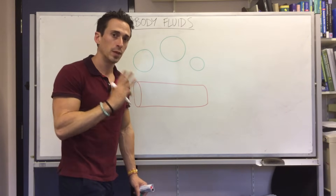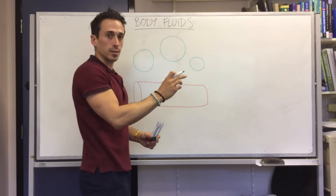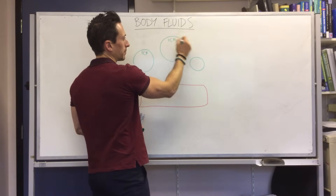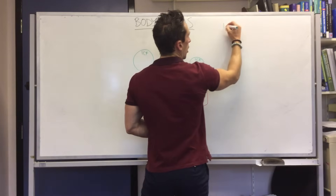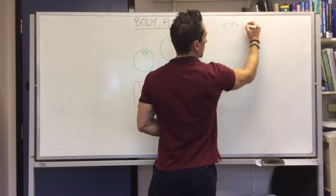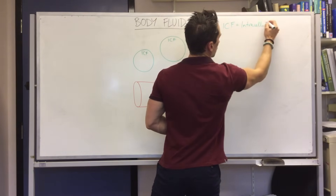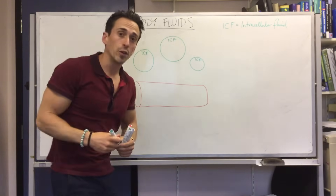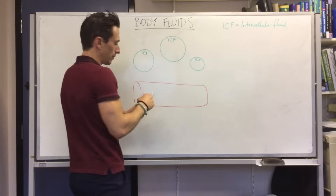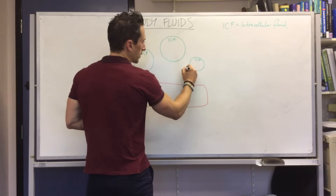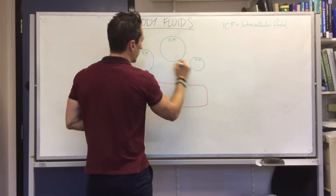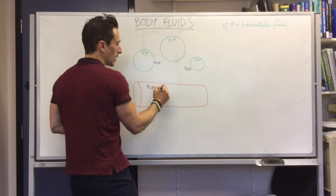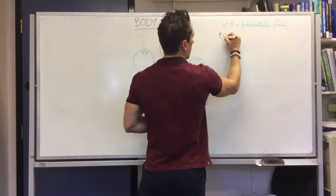The fluid that sits within cells is called intracellular fluid, or ICF. Fluid that sits outside the cell is called extracellular fluid, or ECF — and that includes both the fluid between the cells and the fluid within the blood vessel.